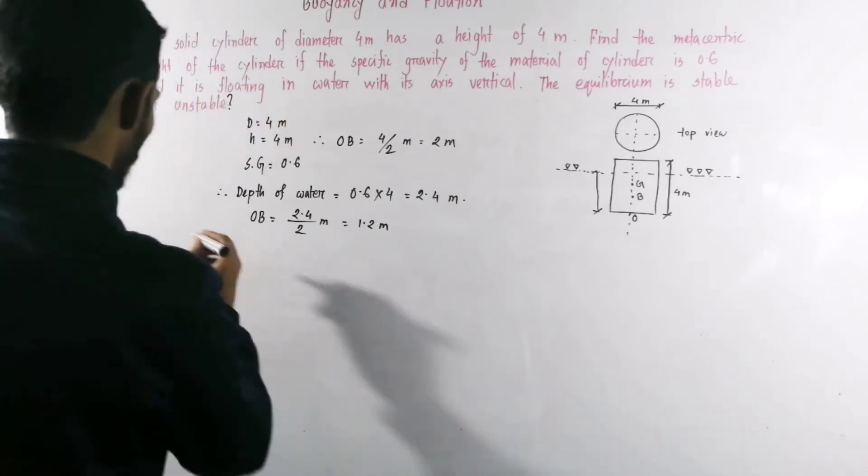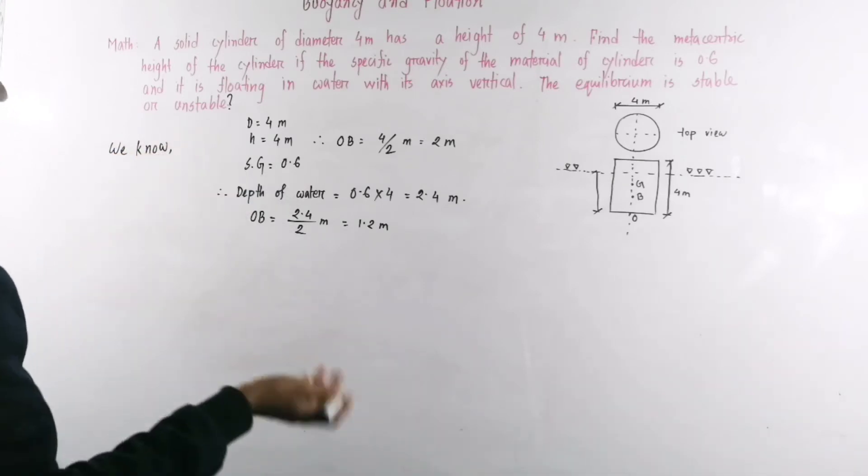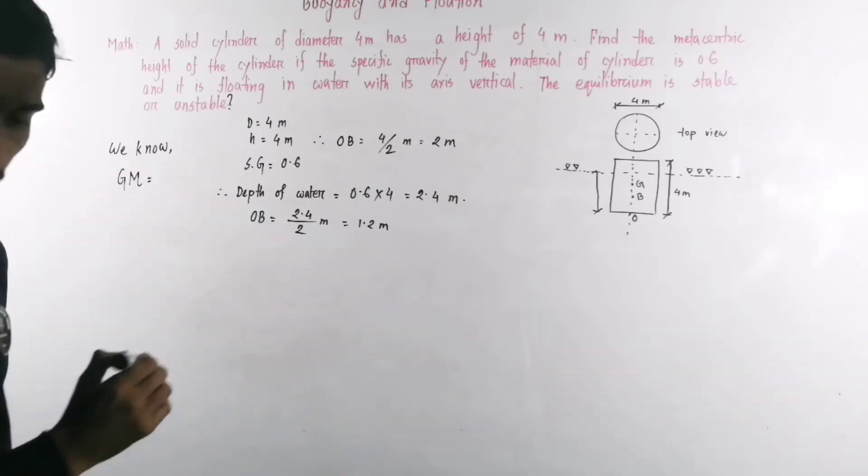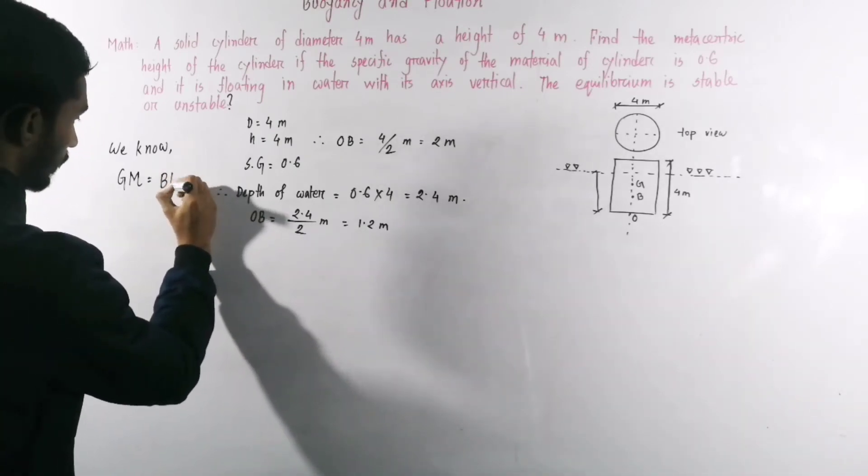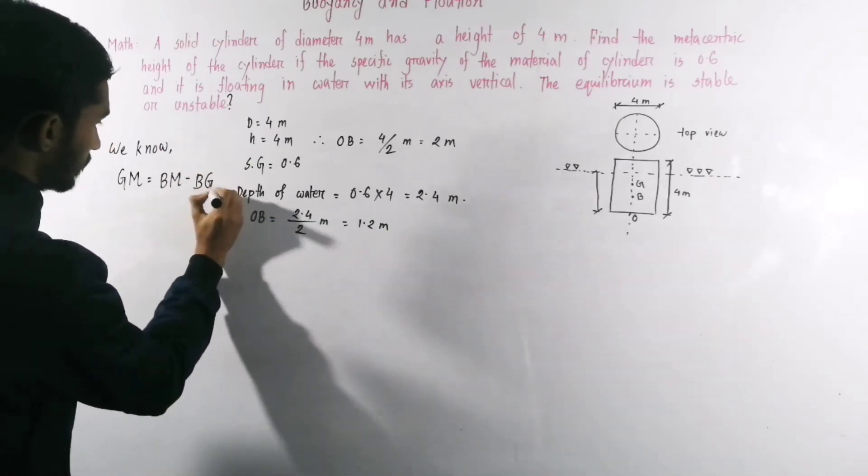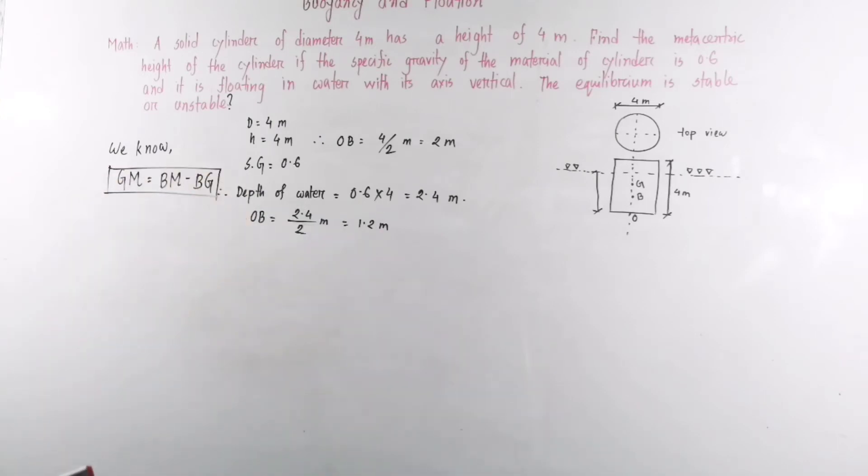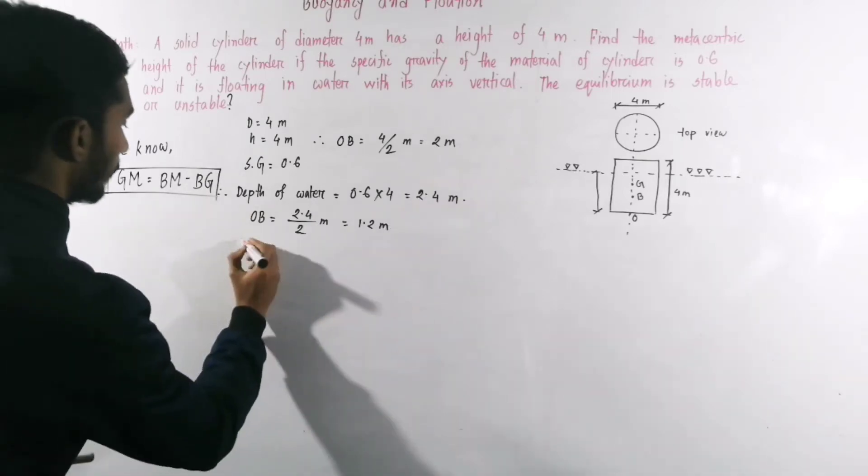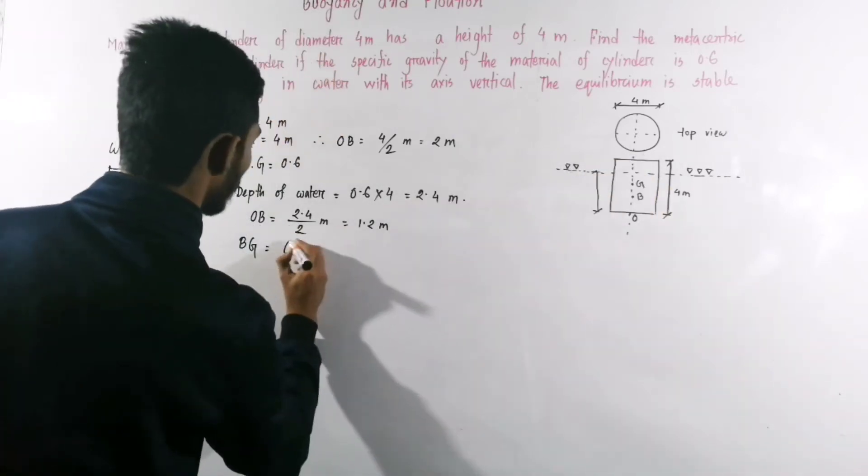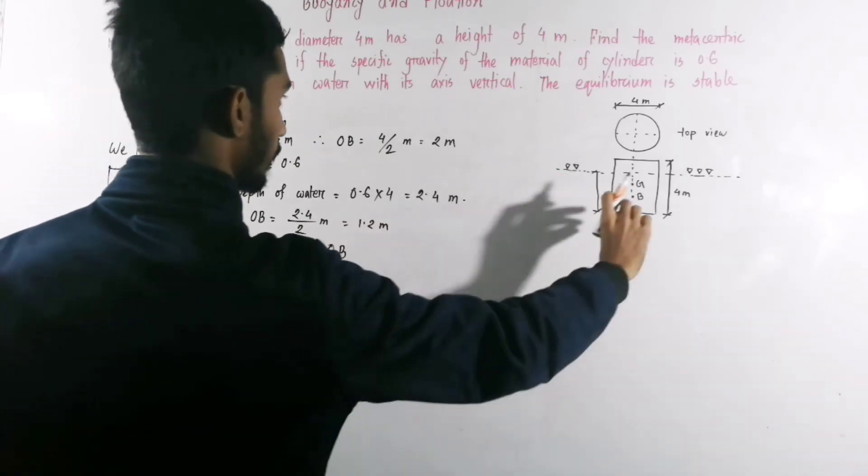We know metacentric height GM equal to BM minus GB. BG, I'm going to do it. I by V minus OB.